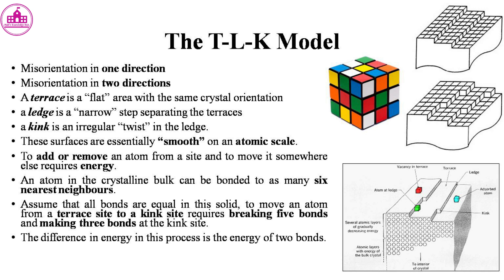A terrace is a flat area with the same crystal orientation. A ledge is a narrow step separating the terraces. A kink is an irregular twist in the ledge. These surfaces are essentially smooth on an atomic scale.